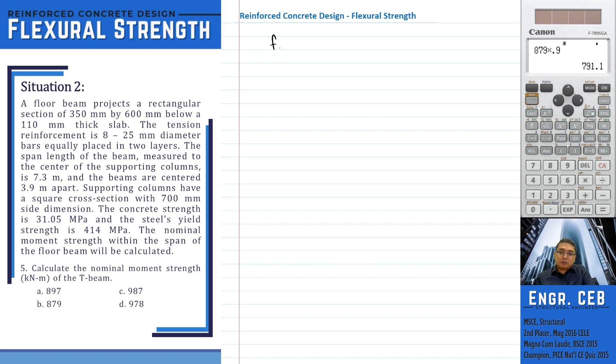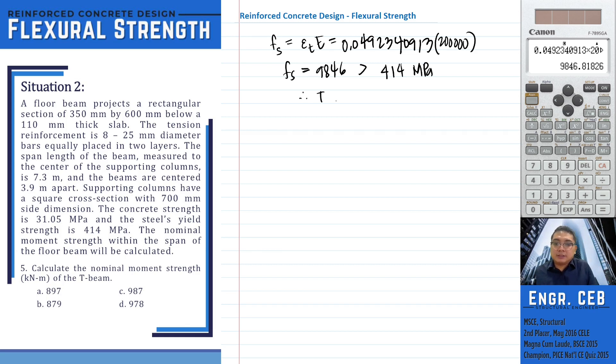To determine if the steel yields, we multiply epsilon_t by the modulus of elasticity. We have 0.0492340913 times 200,000. The stress in the steel is 9846 MPa, which is way beyond the yield strength of 414 MPa. Therefore, we confirm that the steel yields.